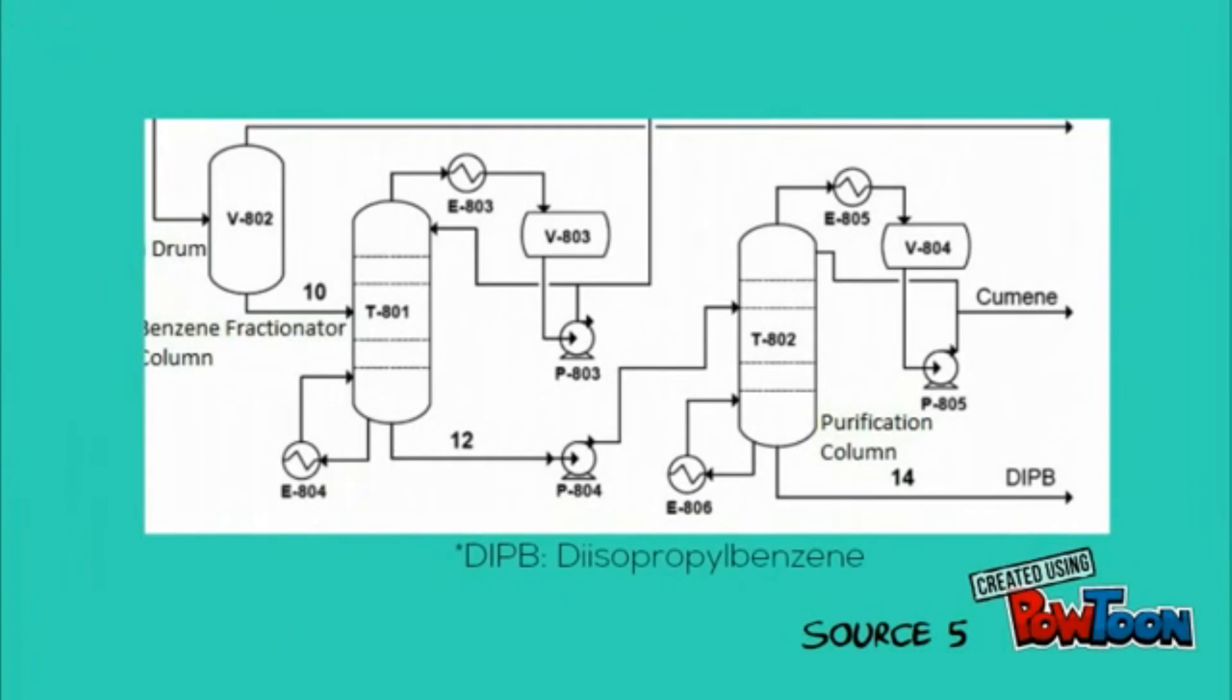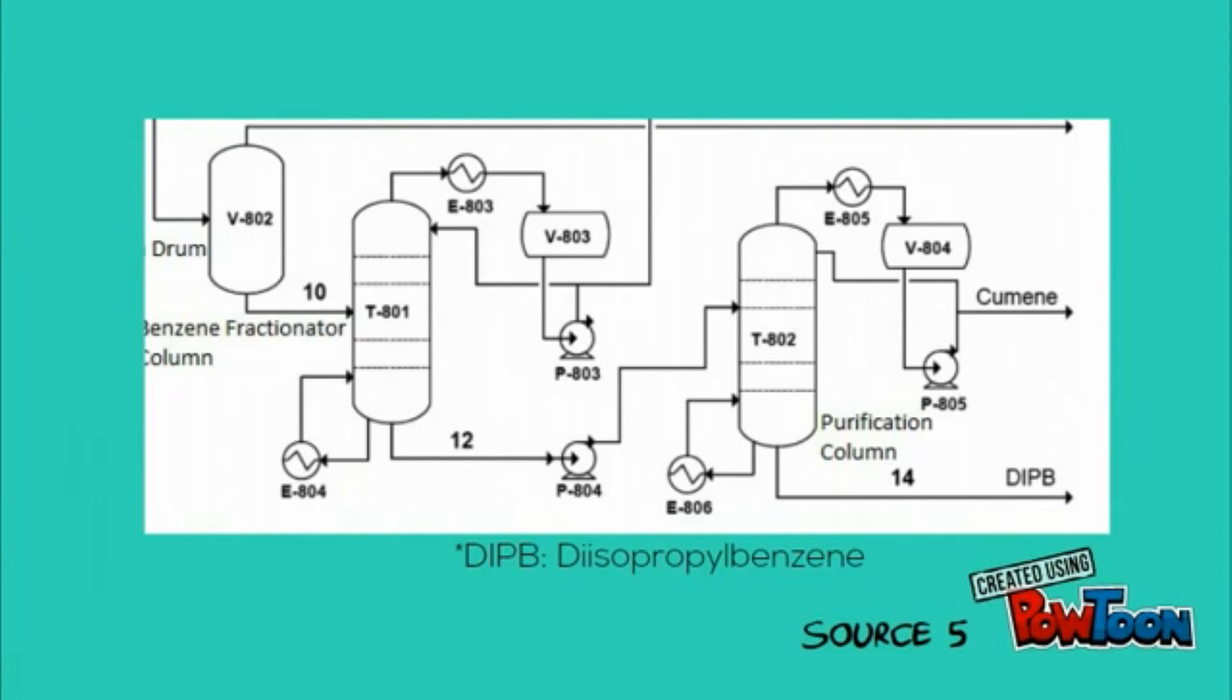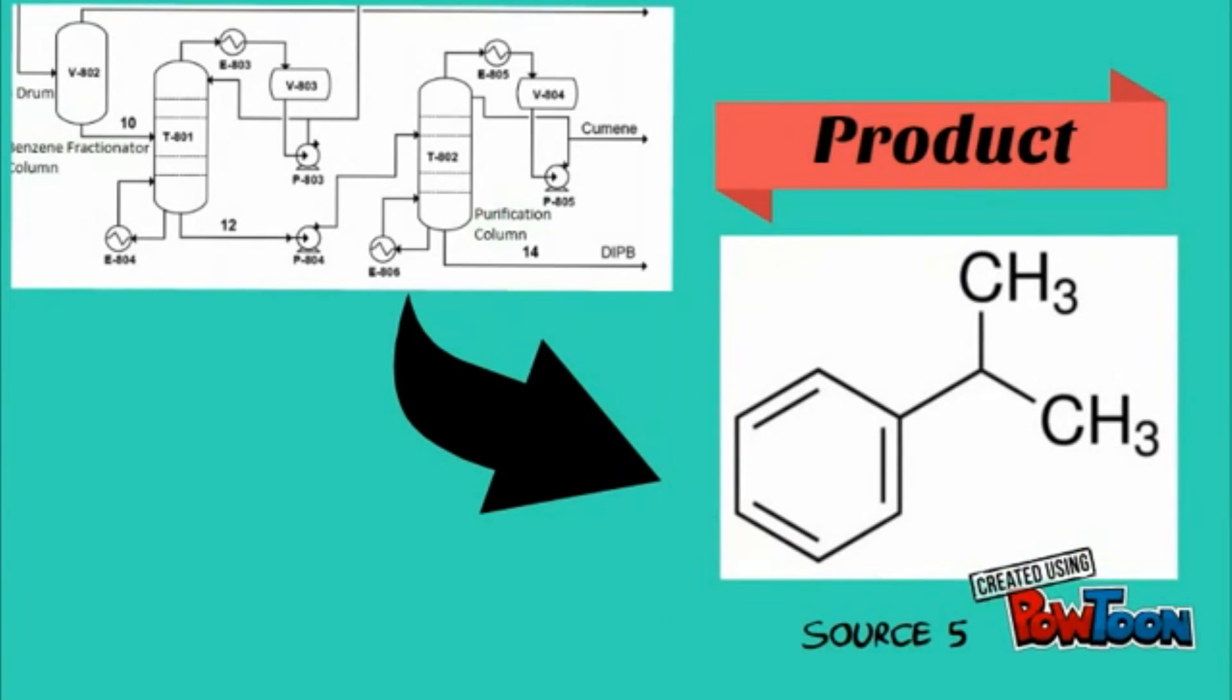The distillation system is designed to recover high-purity cumene product. The unconverted benzene and polyisopropylbenzene are separated and recycled to the reaction system.